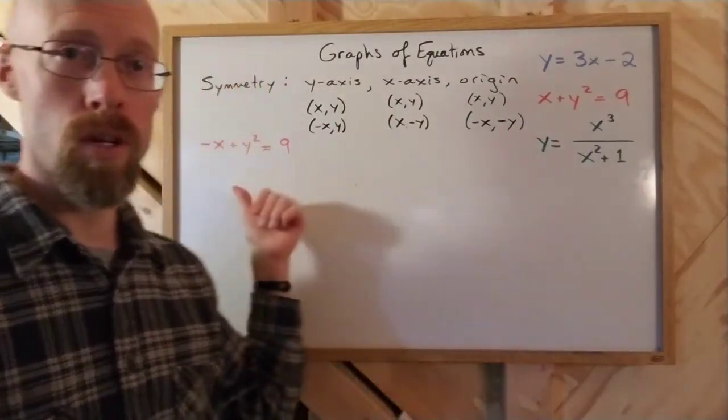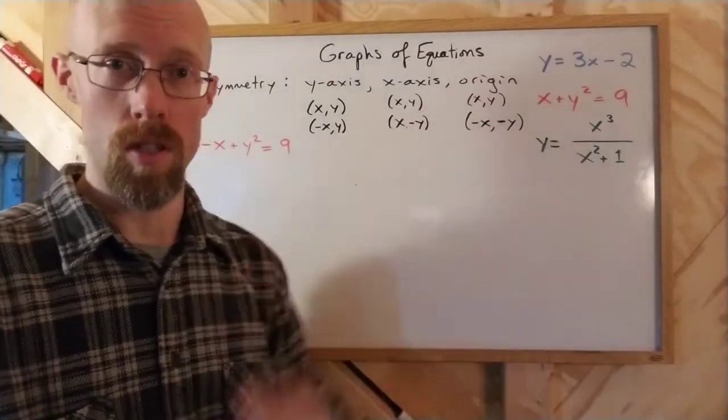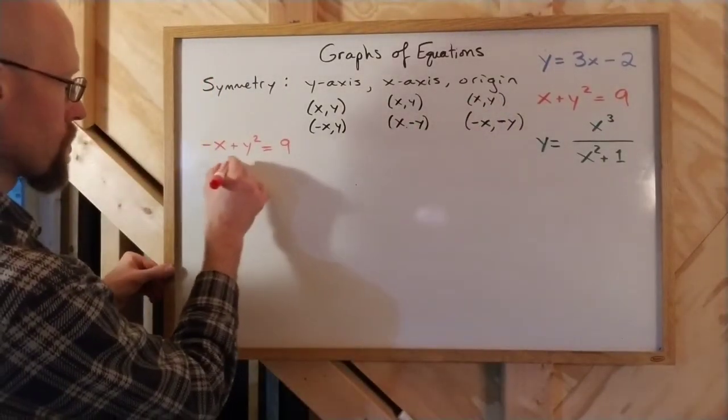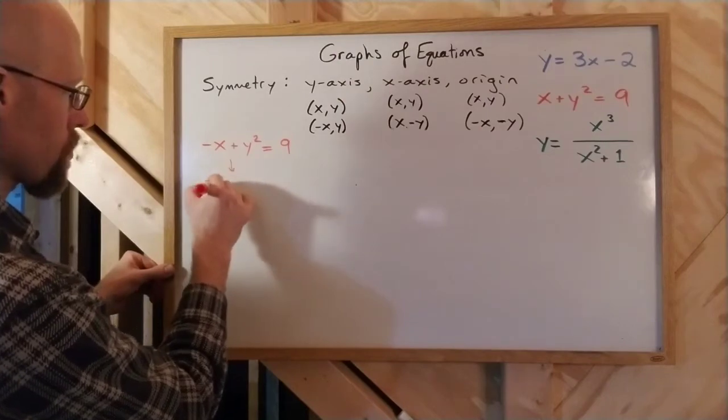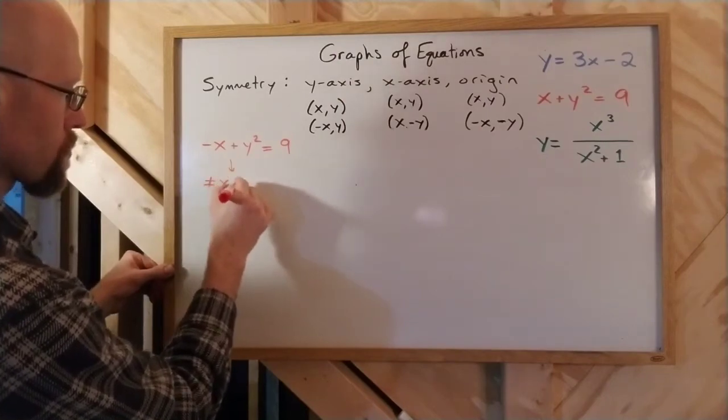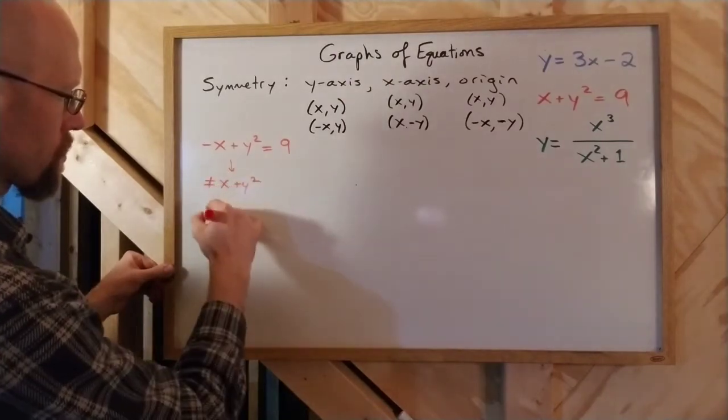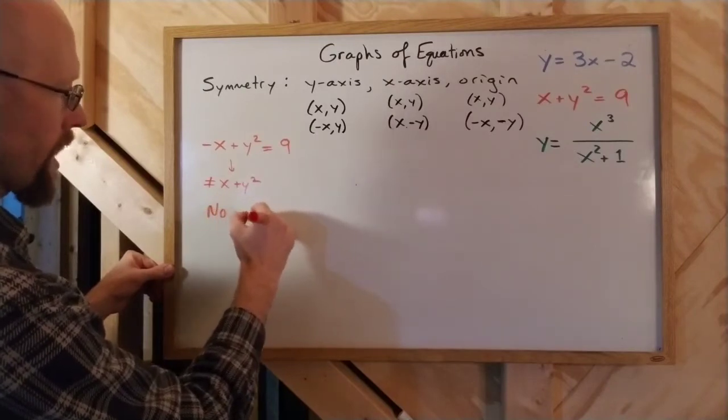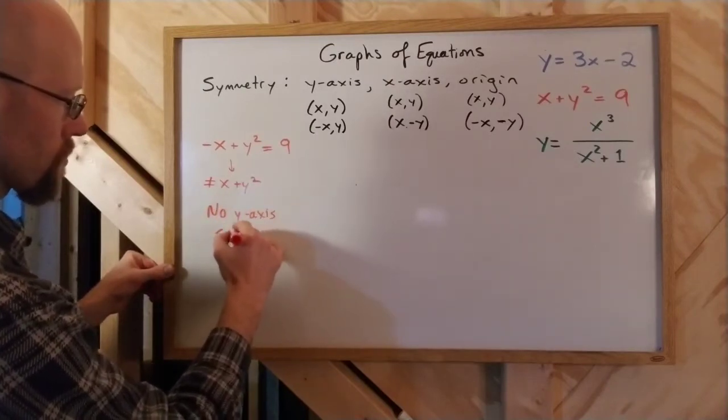And so this new equation is different from the original equation. And so because this side here is not equal to the original x plus y squared, I would say that there is no y-axis symmetry on this one.